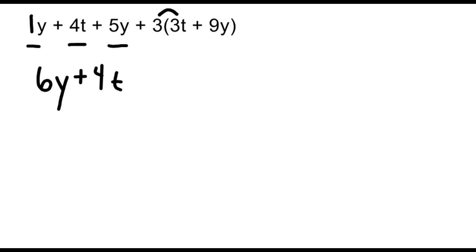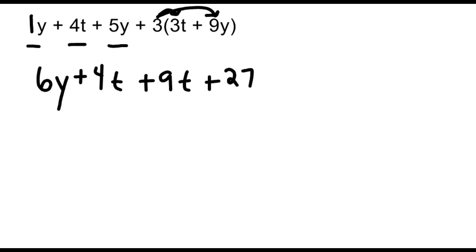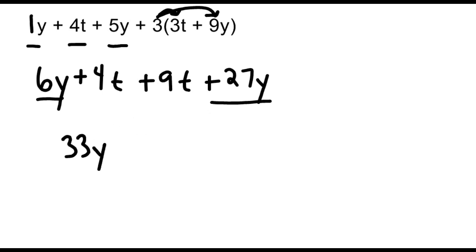Next, we multiply 3 by 9y, which is equal to 27y. Now we have four terms. We can shorten this expression by combining 6y and 27y: because 27y has a plus sign in front, we just add it with 6y for 33y. Then we combine plus 4t and plus 9t for a total of 13t. Simplifying to two terms is as far as we can go, because you cannot combine a y term with a t term.